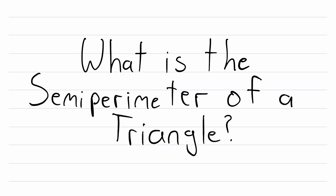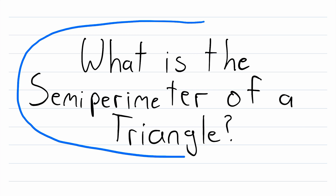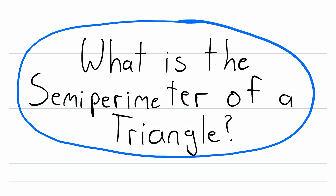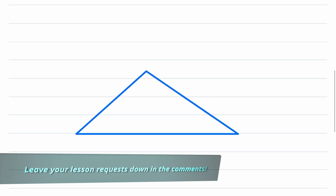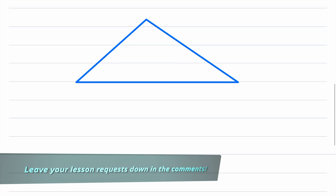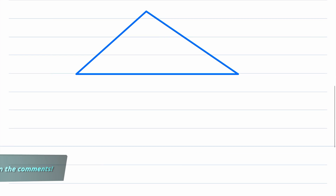Hey everyone, welcome back to Wrath of Math. In today's video we'll be answering the question: what is the semi-perimeter of a triangle? The semi-perimeter of a triangle is really exactly what it sounds like — it's just half of the perimeter of the triangle.